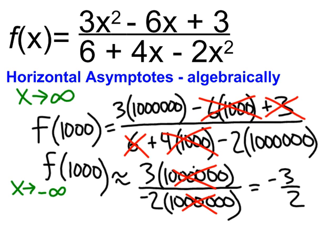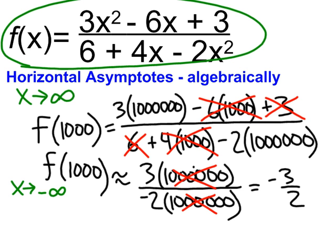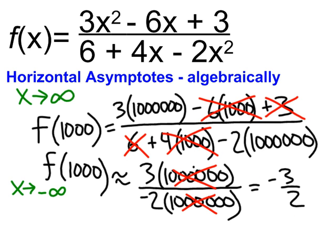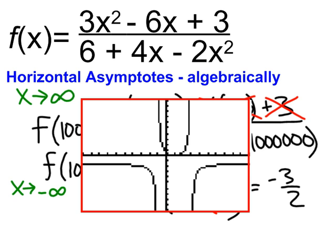The question I ask you: will the y value of this function ever equal negative 3 halves? The answer is no, because we've done these approximations and crossed out terms that don't contribute much — but those terms do make a little bit of difference. The 6,000, the 3, the 6, and the 4,000 will keep it from actually equaling negative 3 halves. But we're going to say the graph gets very, very close. So as x goes towards really, really big values, the graph is going to get closer and closer to a y value of negative 3 halves.